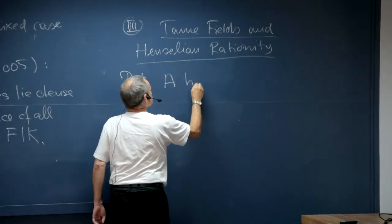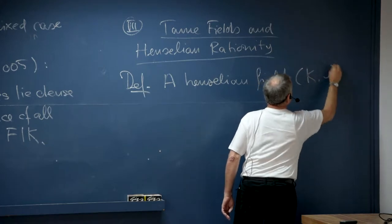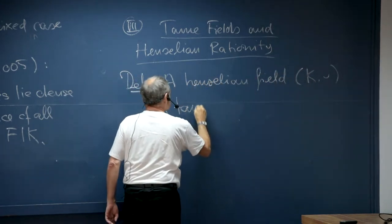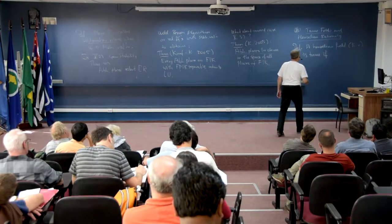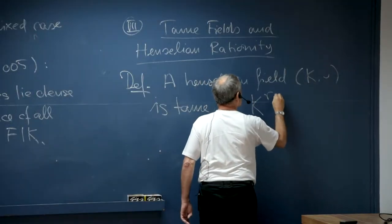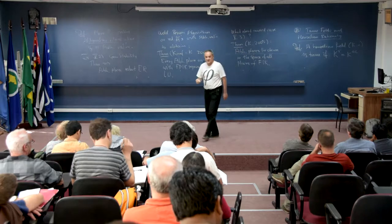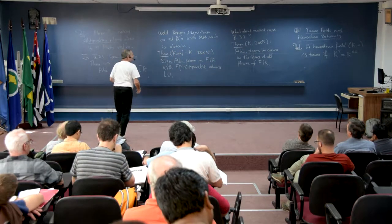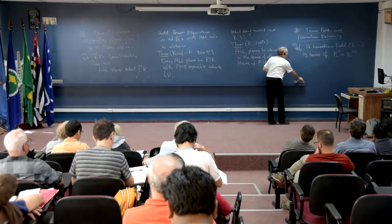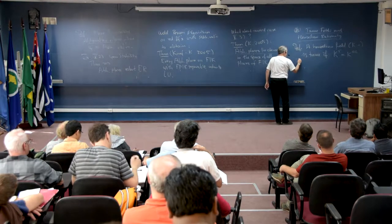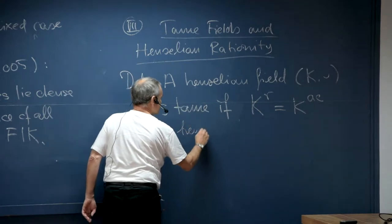Definition: a Hanselian field KV is tame if its absolute ramification field is algebraically closed. This appears when you have residue characteristic zero and then you only have tame ramification. Let me make it clearer by citing a theorem. A Hanselian field KV is tame if for every finite extension L over KV — and remember, because it's Hanselian, the extension of the valuation is unique.